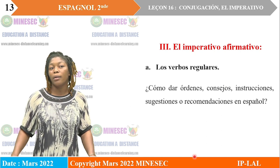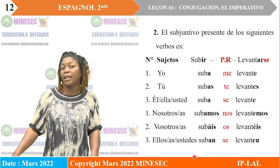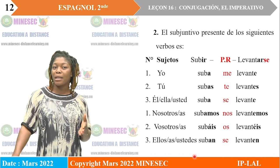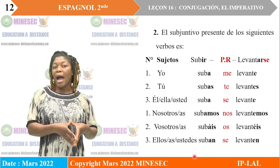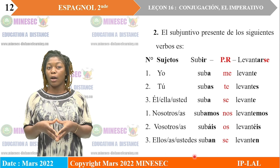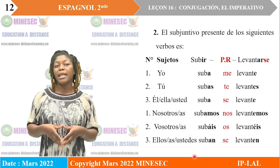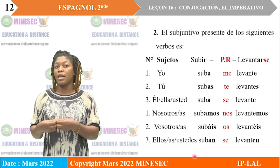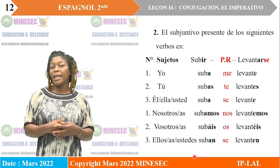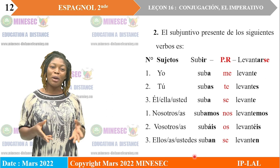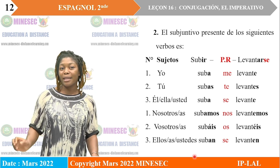Para continuar, hay que ver que todo el mundo debe ser capaz de manejar el presente de indicativo de estos verbos. Hay el presente de indicativo del verbo estudiar, un verbo de la primera conjugación; el verbo comer, un verbo de la segunda conjugación; el verbo subir, un verbo de la tercera conjugación; y el verbo pronominal levantarse. También el presente de subjuntivo de estos verbos.